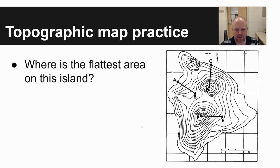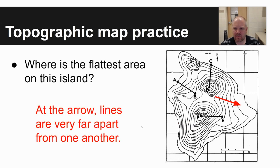Where's the flattest area of this island? If you look towards the right side of the island, you can see there's a very wide area between two lines. That means that there's a very slow change in elevation on the eastern edge of this island.